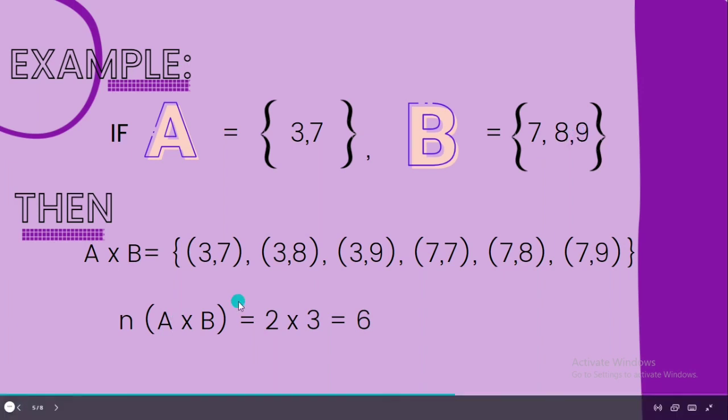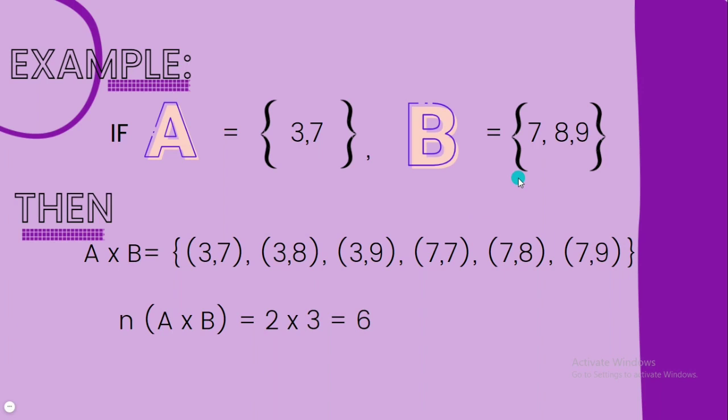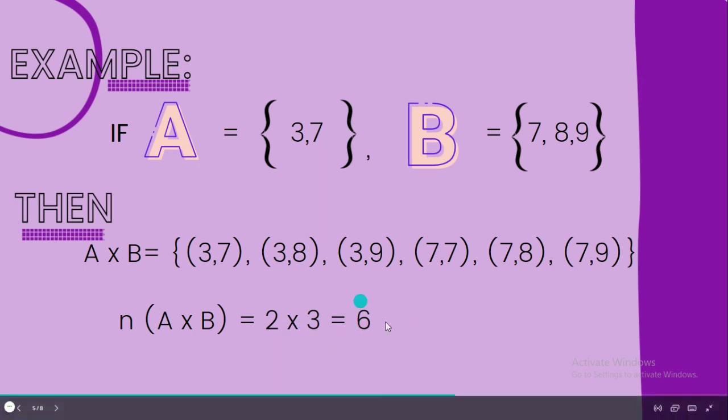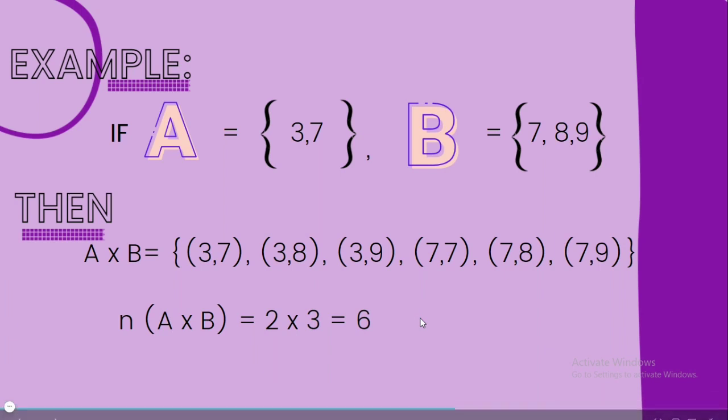And the second number in set A, which is 7, we partner with the numbers in set B. So 7 partnered with 7 in set B gives us (7,7). Then continue, which is (7,8). And lastly, we have (7,9). Since we have 2 in set A and 3 in set B, we just multiply them to get the total Cartesian product of this set, which is 2 times 3 equals 6.